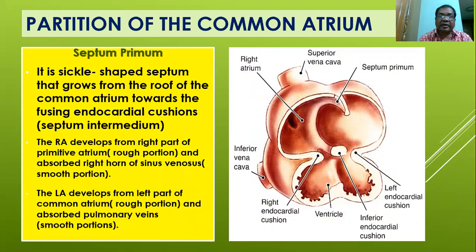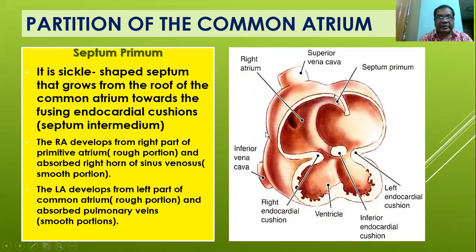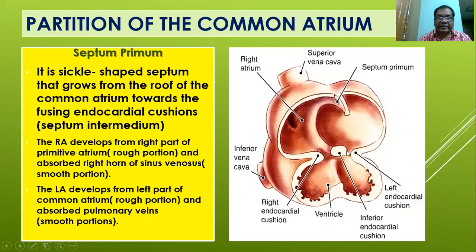Partitioning of the common atrium: septum primum formation. The septum primum is a sickle-shaped septum that grows from the roof of the common atrium towards the fusing endocardial cushion. The fused endocardial cushion — that is the ventral/anterior and the posterior/inferior endocardial cushion — forms the septum intermedium, dividing the atrioventricular canal into right and left AV canals. The right atrium develops from the right part of the primitive atrium (rough portion) and the absorbed right horn of the sinus venosus (smooth portion). The left atrium develops from the left part of the common atrium (rough portion) and the absorbed pulmonary vein (smooth portion).